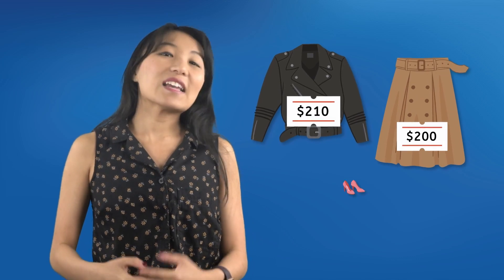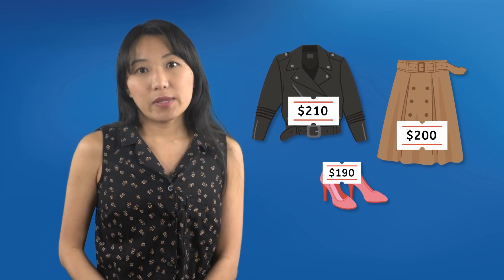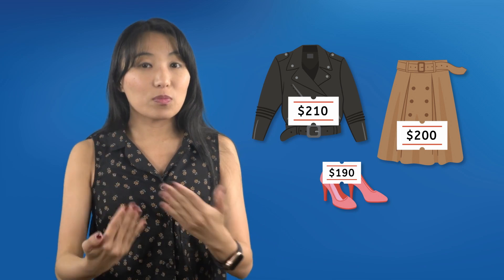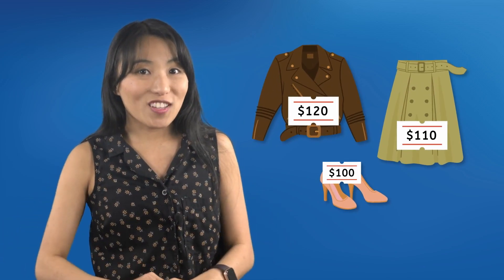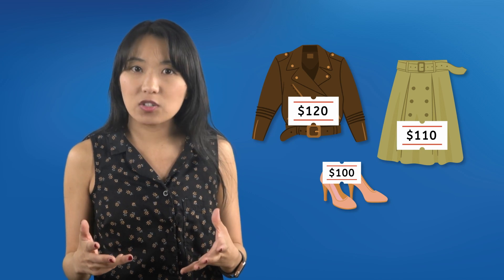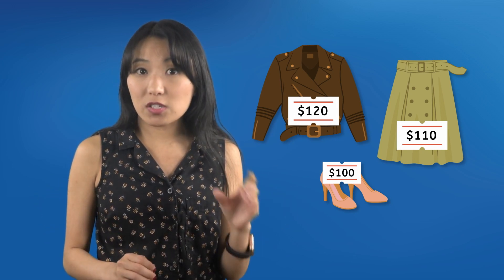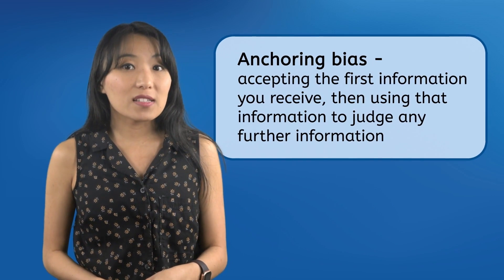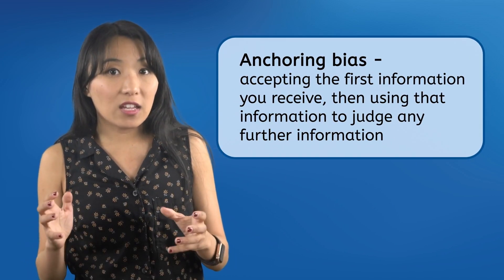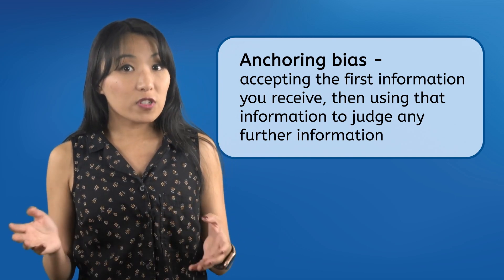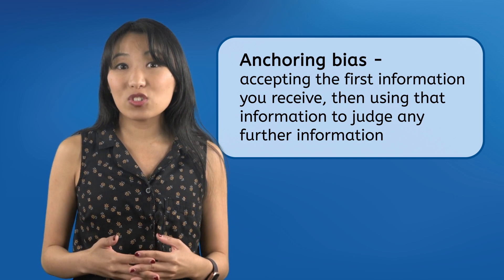If you do a lot of online shopping, you might notice that some websites put their highest-priced items on the homepage. That's because they want these amounts to anchor in your mind as a typical price for their goods. Then, when you find similar items at lower prices, you think you found a great deal — it's almost half off! It may not even occur to you that those items are still way too expensive because you're comparing them to the even more expensive prices you saw first. This is anchoring bias: when you latch on to the first thing you're told — the anchor — and everything after is judged against it. First impressions are a type of bias and they can actually be used to trick you.